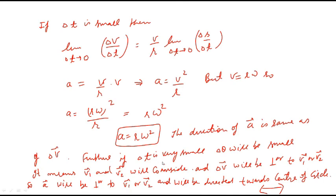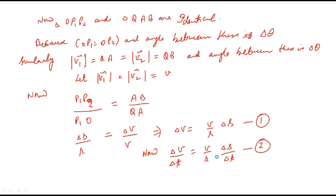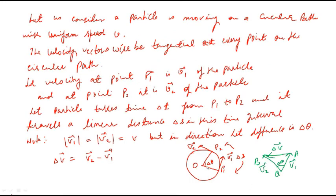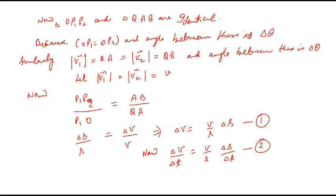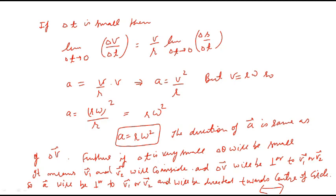It is also important to note that when delta t is very small, delta theta will also be very small. Then the change in velocity delta v will be perpendicular to the velocity v1. So we can say that the acceleration is perpendicular to the velocity vector and it is directed towards the center of the circle. That is why it is called the centripetal acceleration. Thank you.